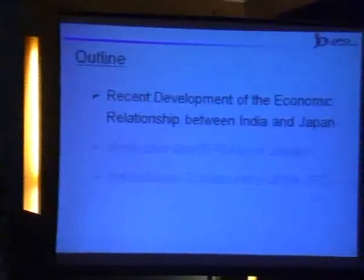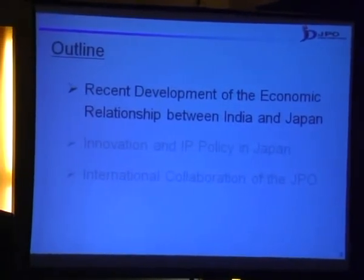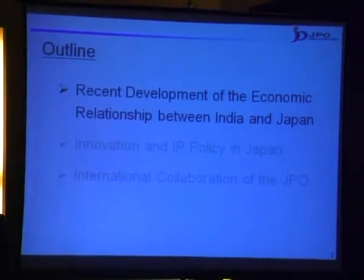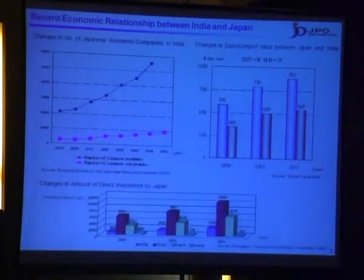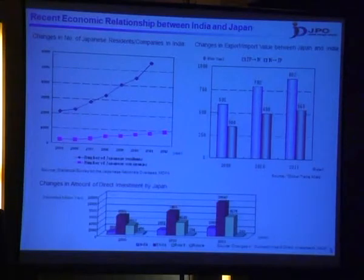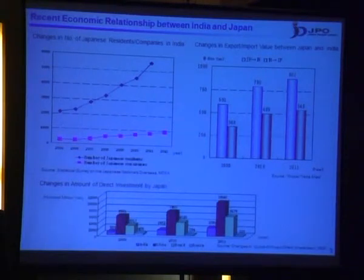Now, let me explain the recent development of the economic relationship between India and Japan. In this presentation, I will give you a complete picture. Please take a look at the chart on the upper right-hand side. This chart shows the changes in number of Japanese residents and Japanese companies located in India. As you can see, the number of both Japanese residents and Japanese companies in India are steadily increasing.